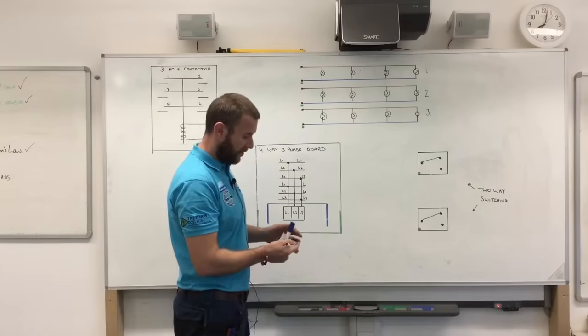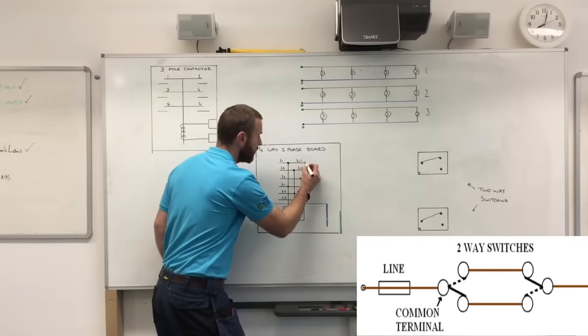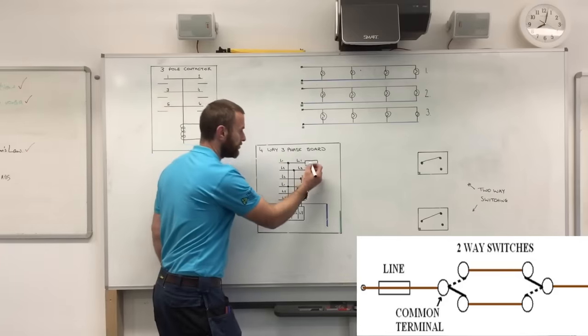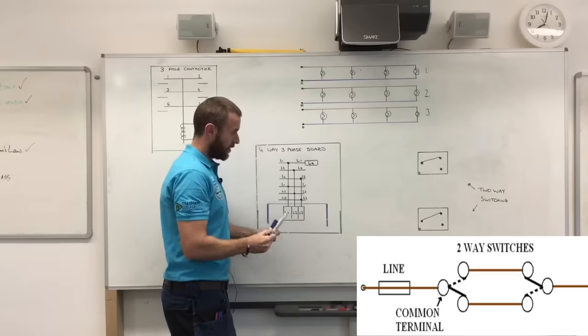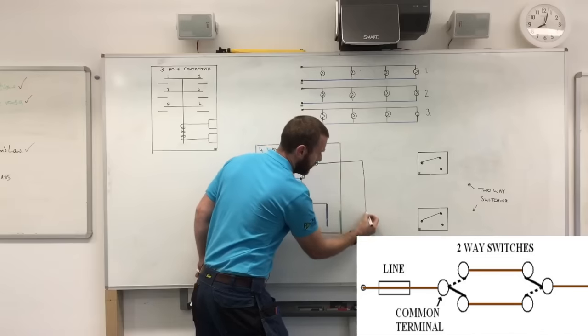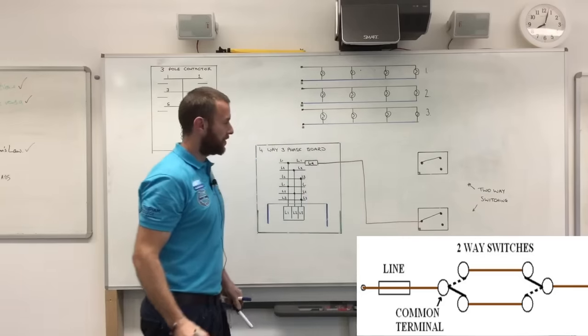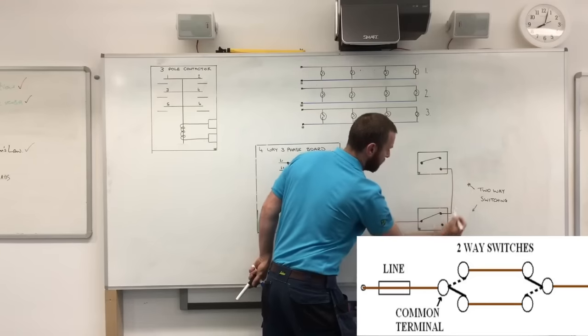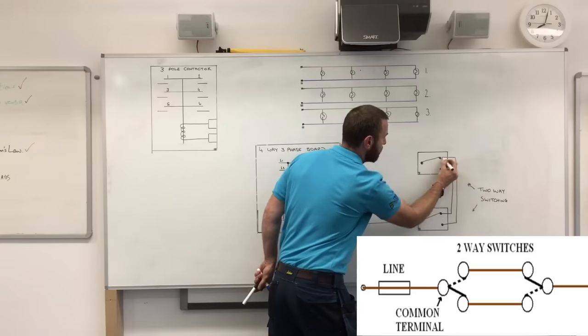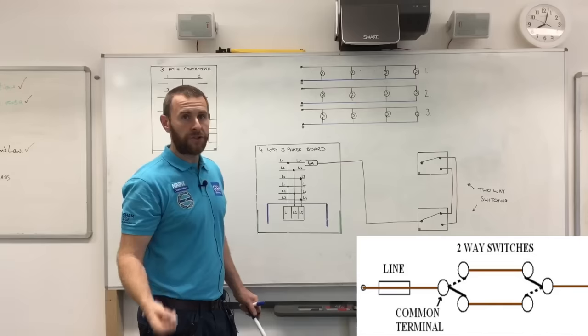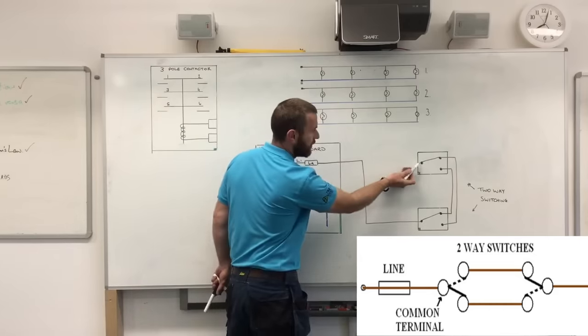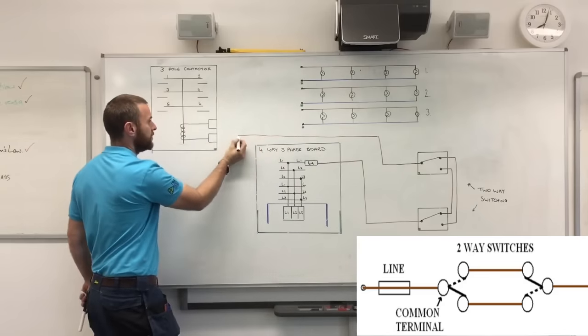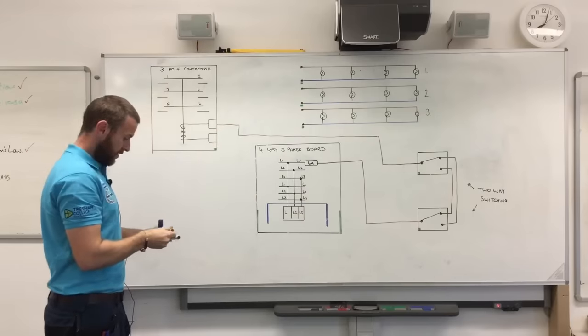So, let's go with the two-way switch in. We're going to have a circuit breaker. And we can take that from any of the spaces there. We're just going to go on to L1 here. Let's rate that at, let's say, six amps. And we're going to take a line conductor through to the common of one of the switches.